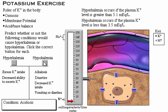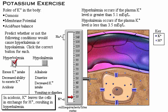In acidosis, potassium leaves the cells in exchange for hydrogen ion, resulting in hyperkalemia.